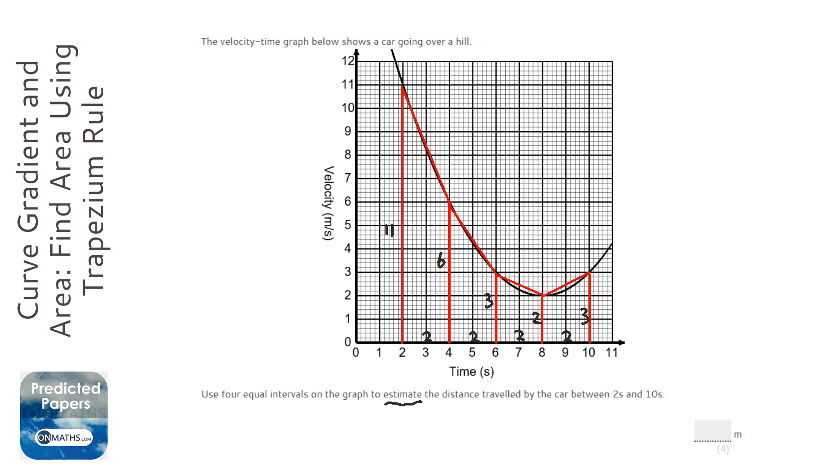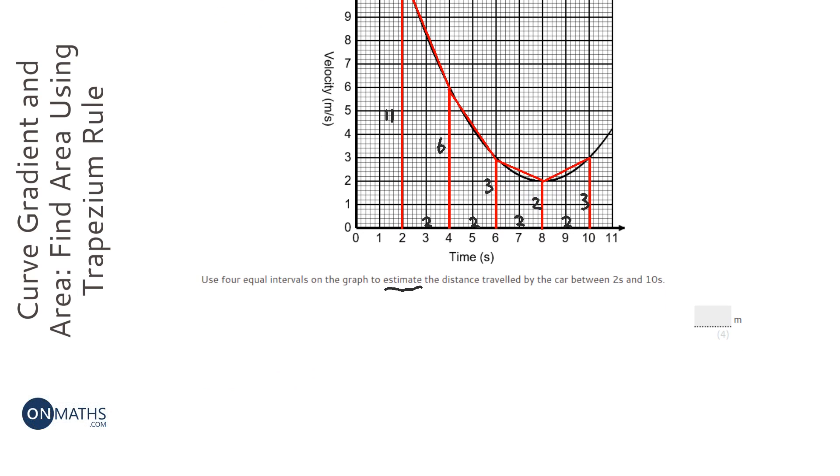OK, so we need to remember how to work out the area of a trapezium. It's half a plus b h. Now this is quite misleading because h actually, using the trapezium rule, is the width of the trapezium. It's because the trapeziums are kind of on their side. So h is always going to be 2 for these. So what I would do is just number the trapeziums that I'm doing.